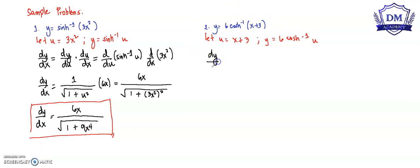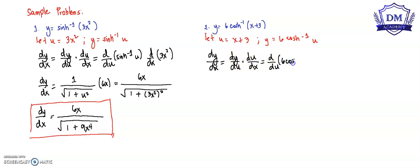Using the chain rule, the derivative of y with respect to x is equal to the derivative of y with respect to u multiplied by the derivative of u with respect to x. We substitute the function y which is 6 times the inverse hyperbolic sine of u, multiplied by the derivative of u, which is x plus 3.